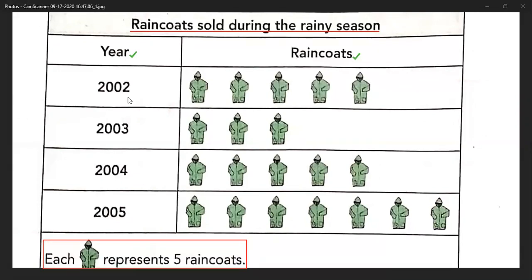In the year 2002, as it is mentioned, each picture of a raincoat represents five raincoats. Counting the images: 5, 10, 15, 20, 25. So in the year 2002, 25 raincoats were sold.